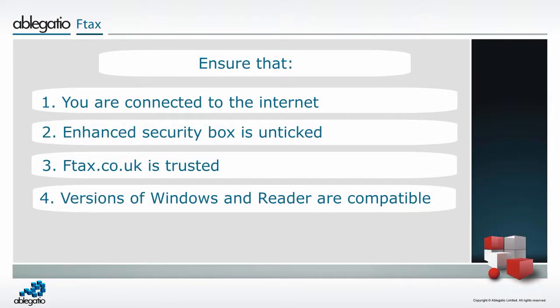The error messages may also appear when you are using an old version of Windows, namely XP or Vista, with the latest version of Adobe Reader. This is because Adobe no longer supports these older versions. If this happens, either update Windows or install an older version of Adobe Reader by going to the Adobe website, finding Get Reader, and selecting Other Languages and Versions.